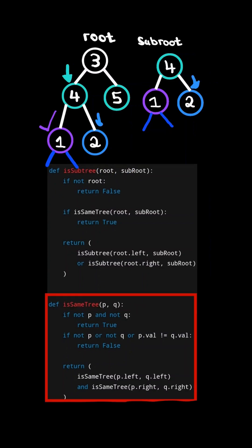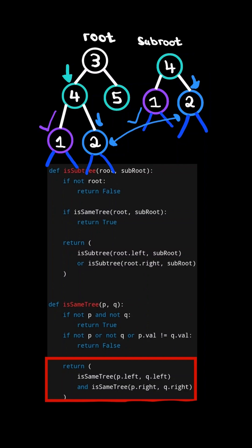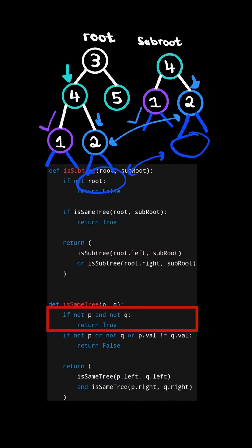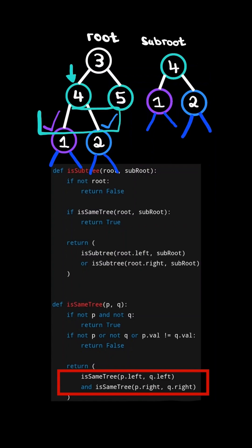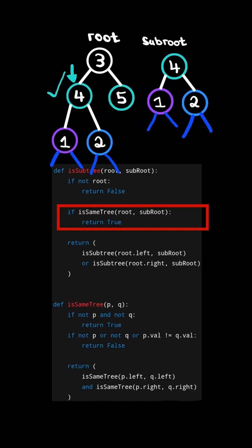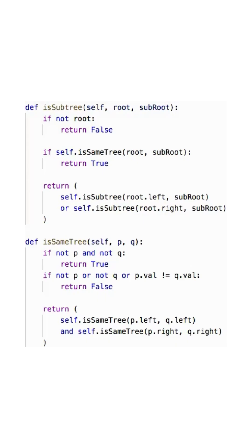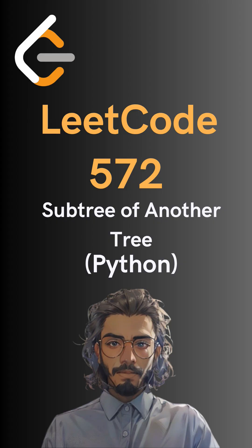Now consider the recursive call on node 2. The values at the nodes are the same, so we create two more recursive calls on their children, and both will return true — so ultimately the recursive call on node 2 returns true. Since both calls on the left and right subtree return true, the original call returns true. If any call to isSameTree returns true, we return true. Here's the code to do so.